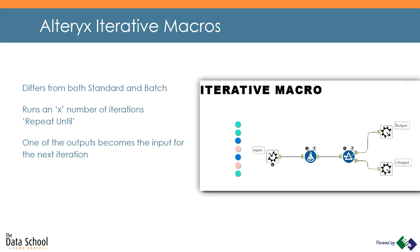The big thing about an Alteryx Iterative Macro, in my mind, is the fact that you can push data through an input and then back out an output, and then back in through the next iteration. So in this case, we're pushing data in, processing the formula, filtering it out, sending it to an output tool, and a new data set comes in to be reprocessed, and so on, until you hit an end condition where it becomes TRUE and you output one set of values.